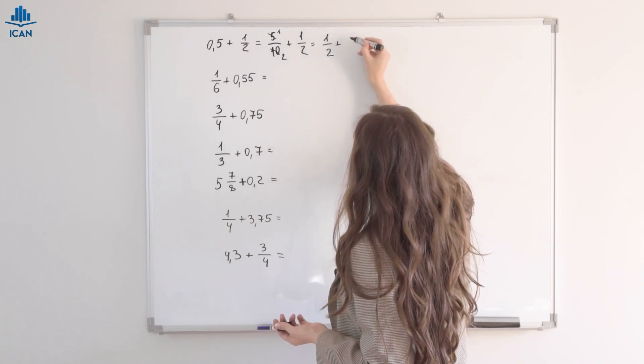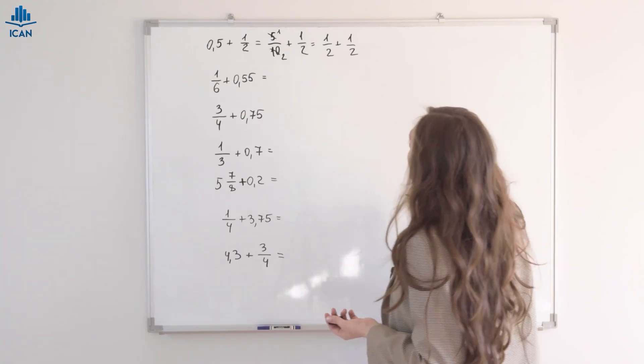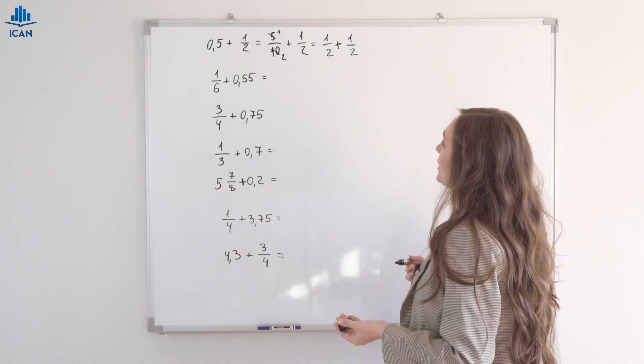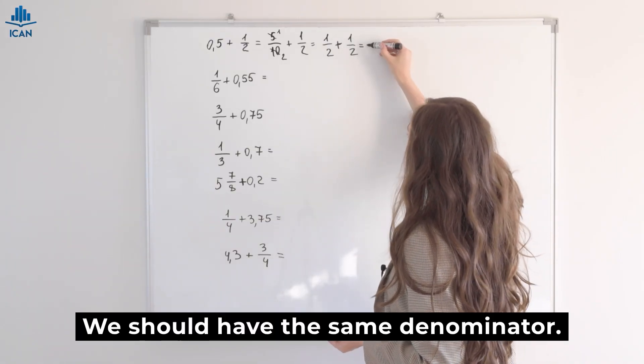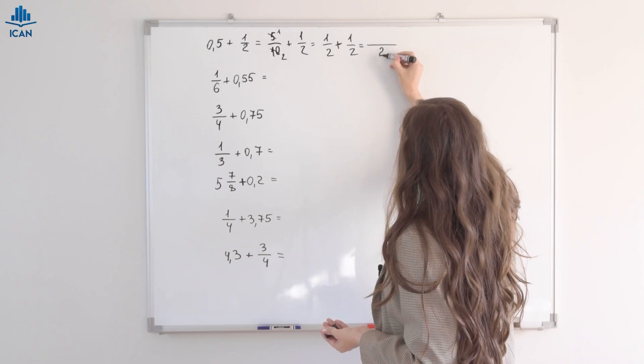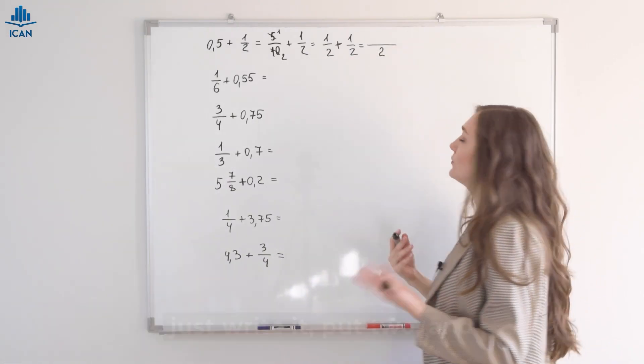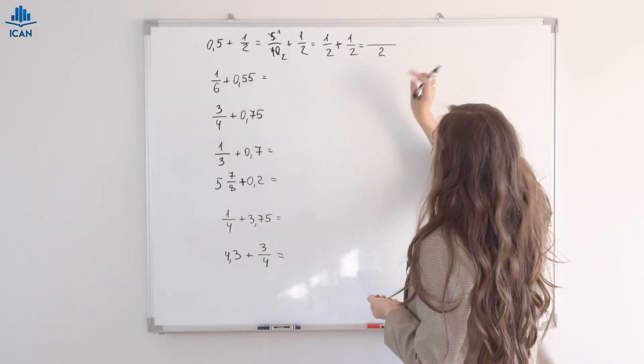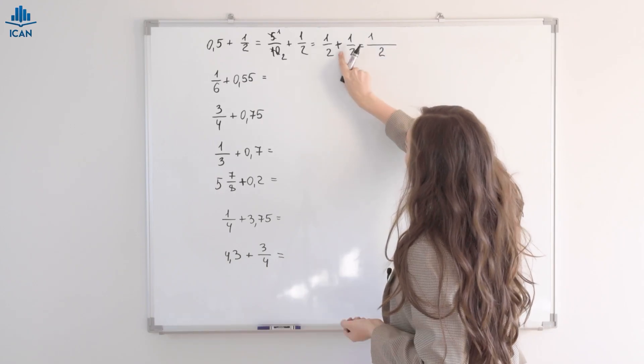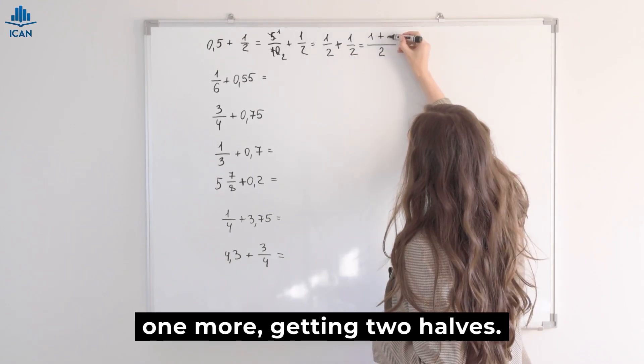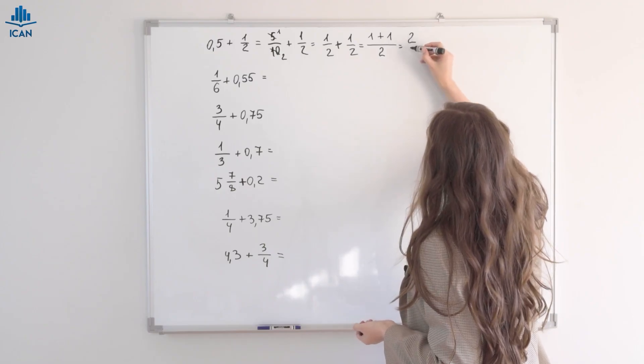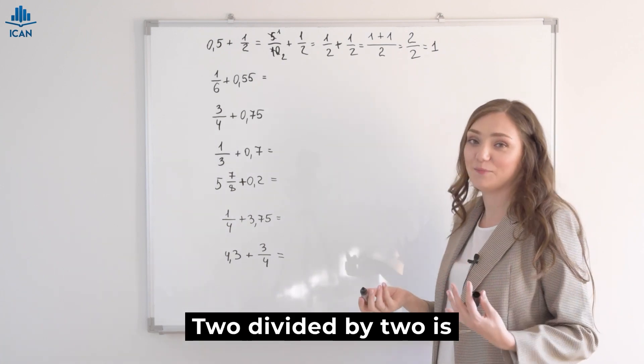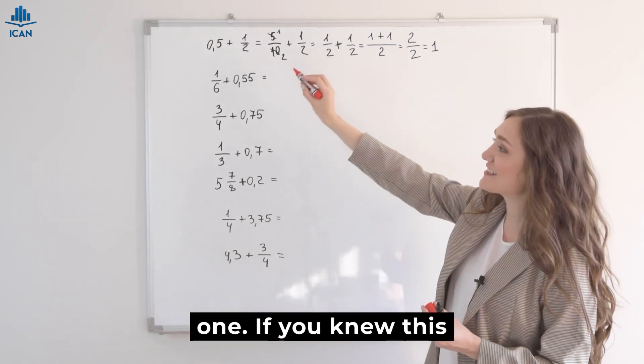It's one-half plus one-half. We're adding identical fractions, but let's follow the rules. We should have the same denominator. With the same denominator, we just write it, put two, and draw a line. We write one, then the plus sign, one more, getting two halves. It equals one, right? Two divided by two is one. If you knew this already, give it a like.